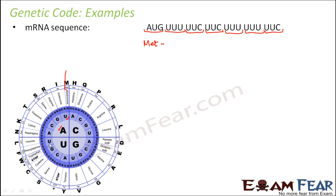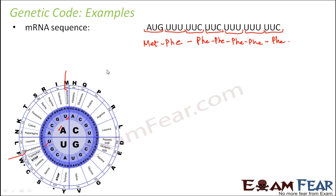The next codon is UUU, which codes for phenylalanine. The following codon UUC also codes for phenylalanine. Continuing through the sequence, UUC and UUU both code for phenylalanine. So the amino acid sequence determined from this mRNA is: methionine, phenylalanine, phenylalanine, phenylalanine, and so on. This is how we can determine the sequence of amino acids from an mRNA sequence.